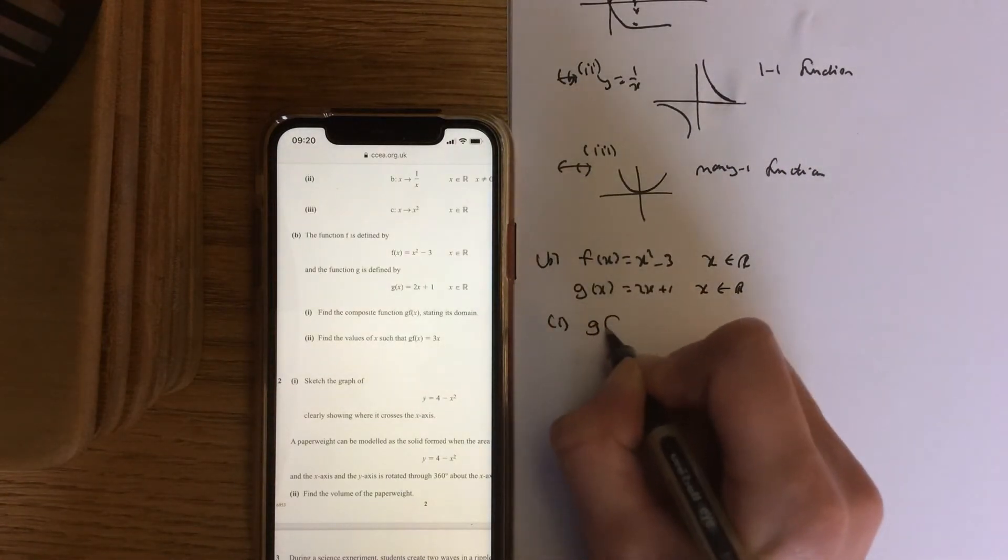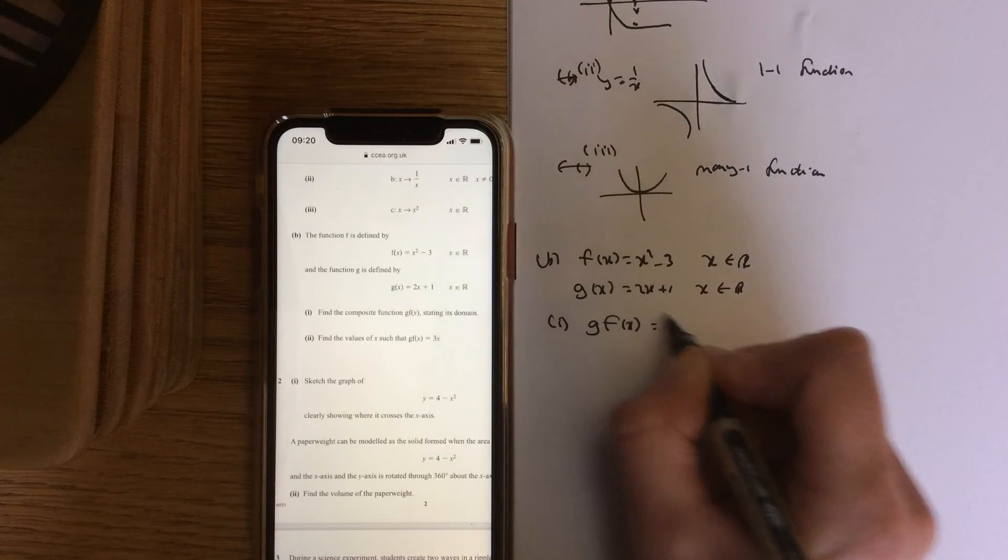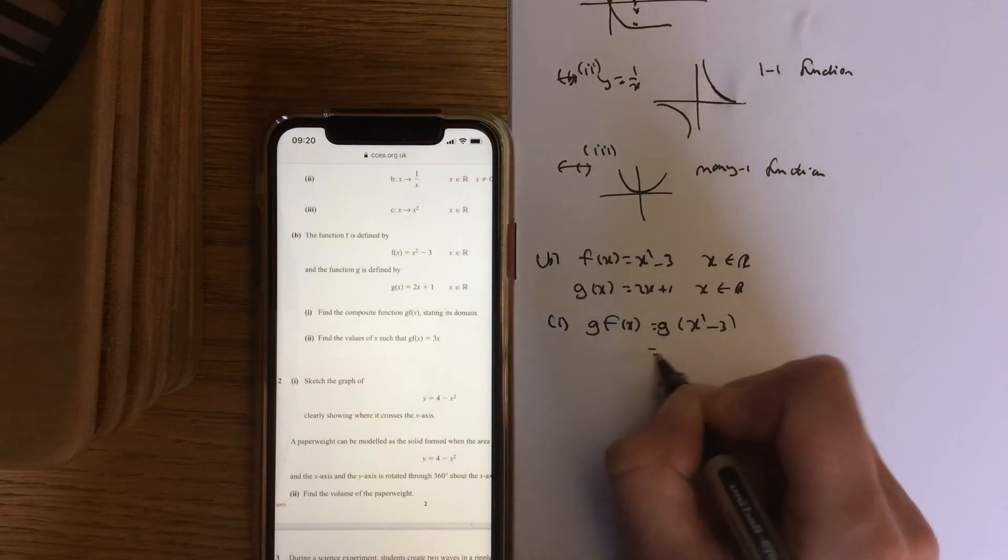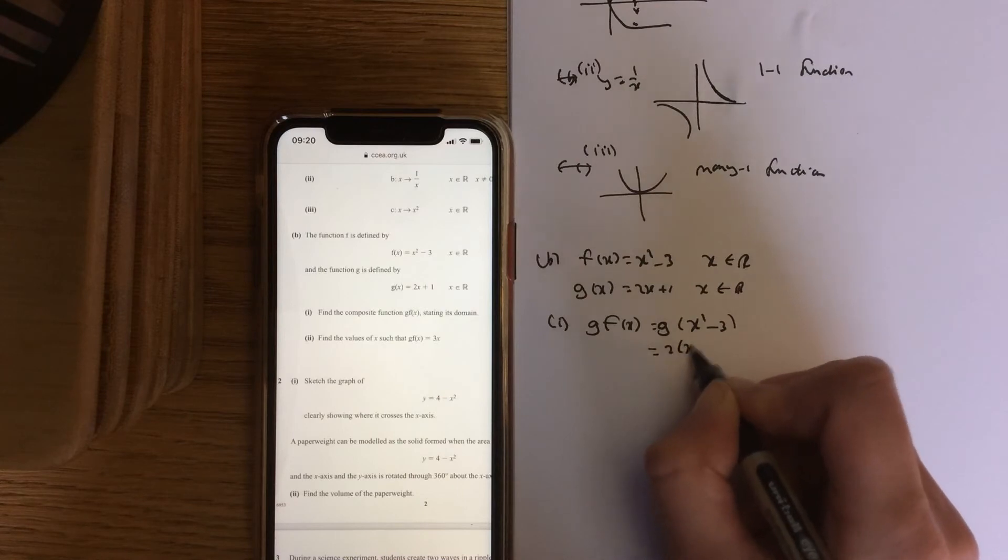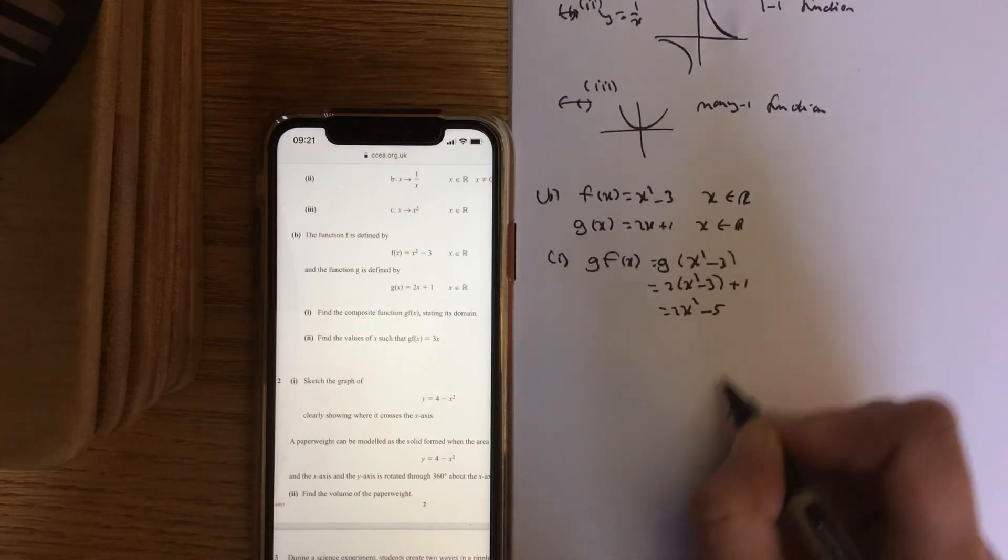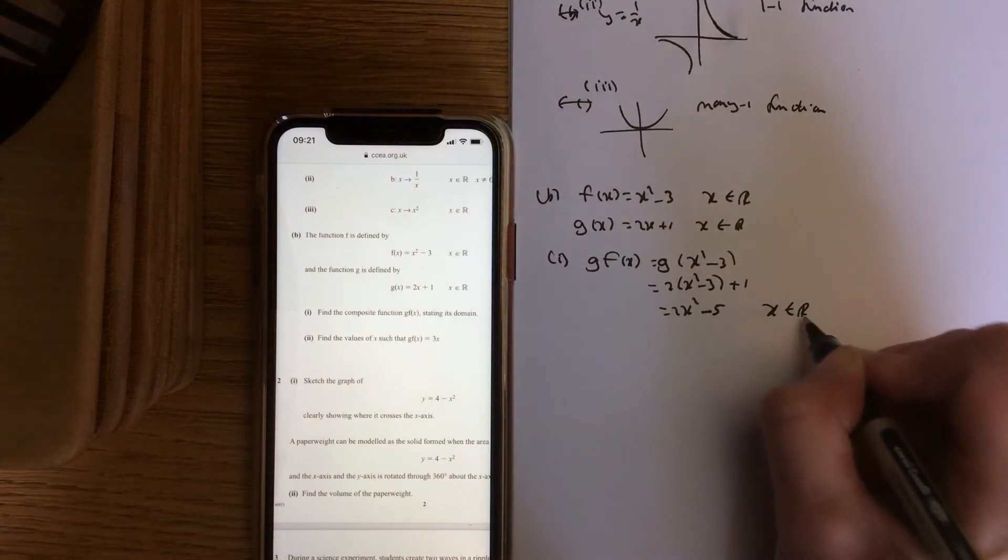Question is asking you for gf(x). So here's your f(x), put it inside your g. So x squared minus 3 goes in g, where the x should be. Tidy that up. 2x squared minus 6 add 1 is minus 5. And x can be any number there.